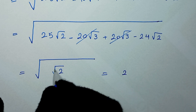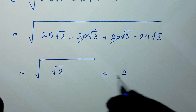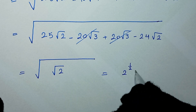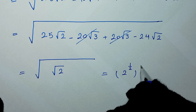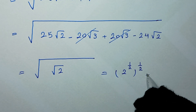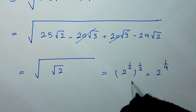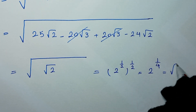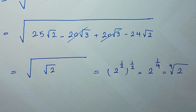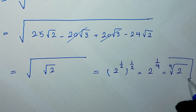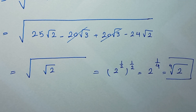We can write square root of 2 as 2 to the power of 1 over 2, and the outer square root as the power of 1 over 2. So this equals 2 to the power of 1 over 4, or the 4th root of 2, and this is our final answer. Thank you for watching. Don't forget to like and subscribe, and see you in the next video. Goodbye.